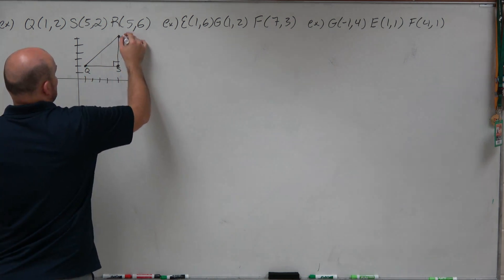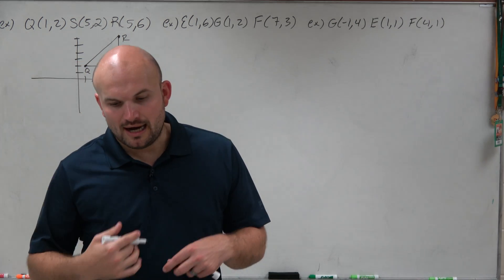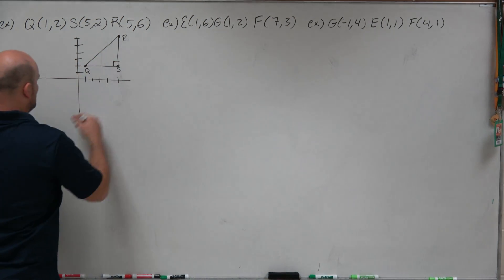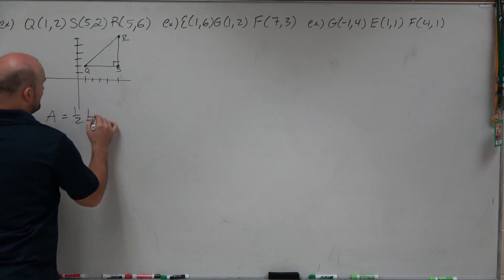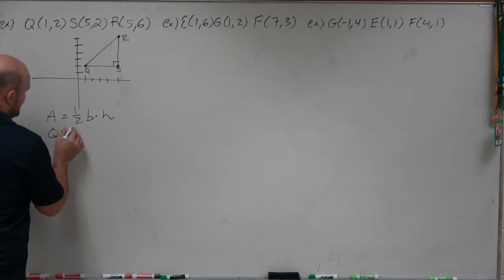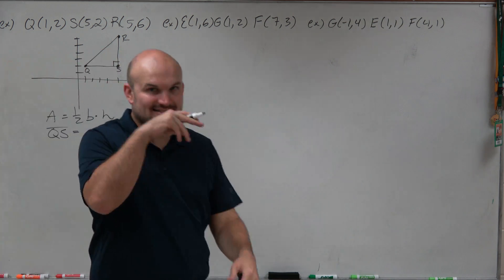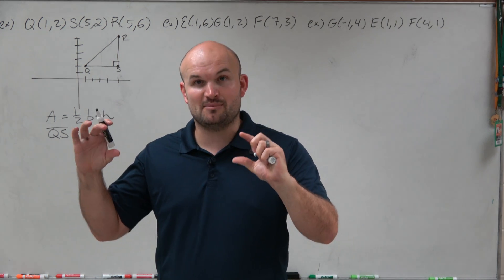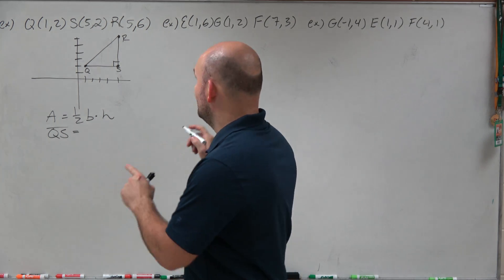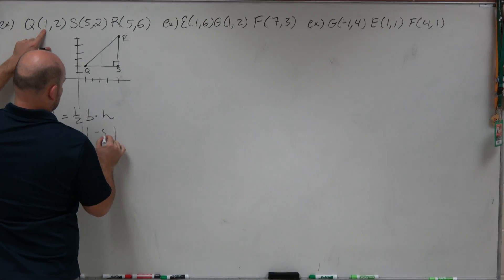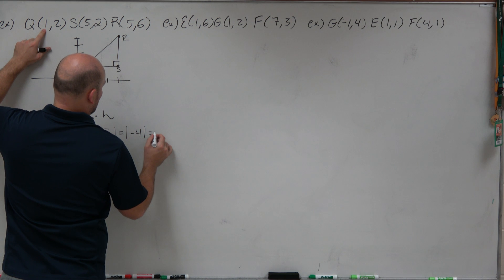In this case, we have a fairly basic one as far as finding the area. You can see that QS is going to be our base. Remember the area of the triangle is one-half base times height. Now side QS — you could find the distance, but a lot of times you can just count. It's really just the difference of our two x-values and taking the absolute value: 1 minus 5 equals the absolute value of negative 4, which is 4.